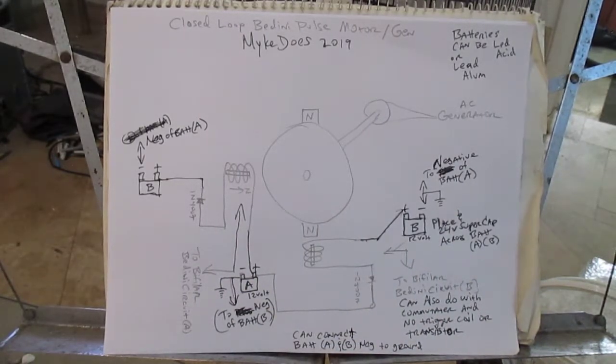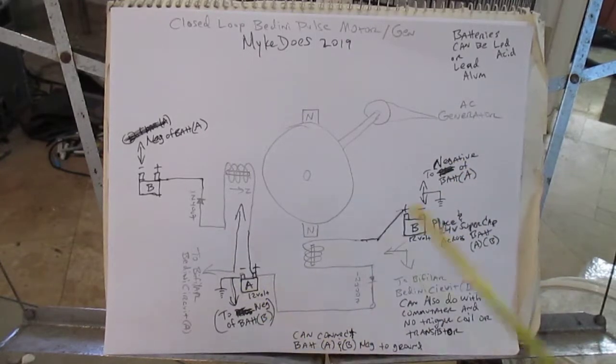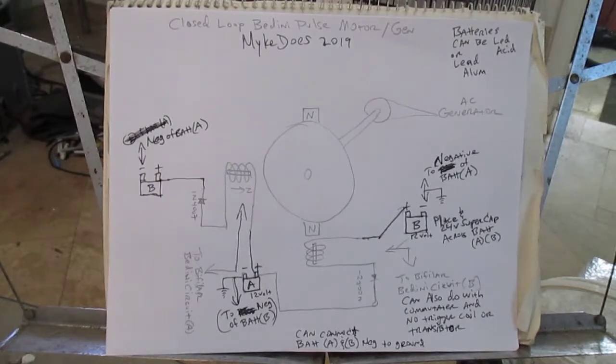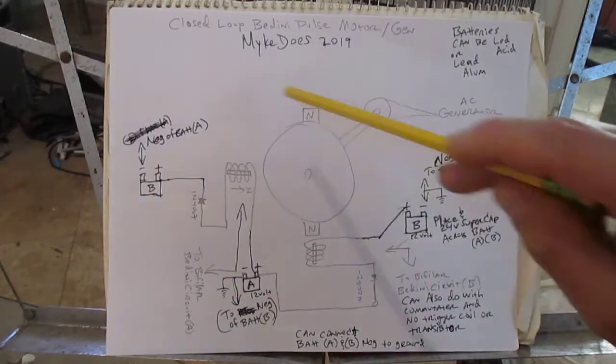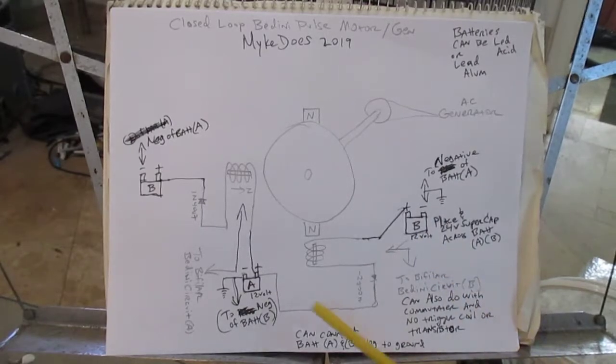You can also connect all the negatives from battery A and B to earth ground. That might give better performance, not sure yet. Like I said, I didn't build it. But this system should recycle the pulse from battery B into the pulse from battery A.